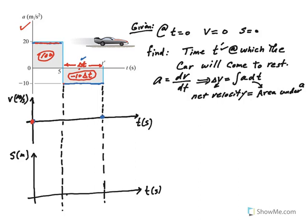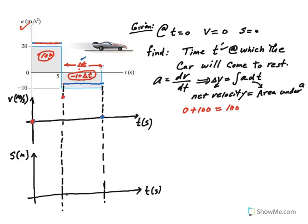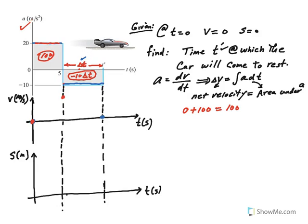We're starting at 0 position, we add this area to it, that will give you our next value of velocity, which is 100. So this becomes 100. The question is, how do I connect 0 to 100?